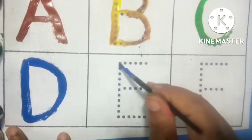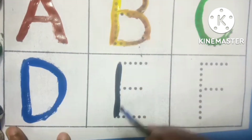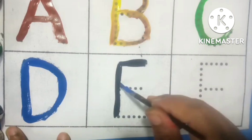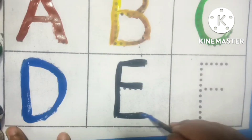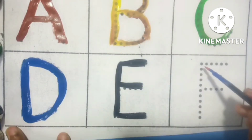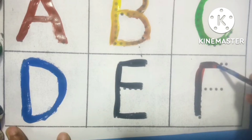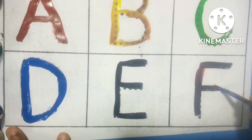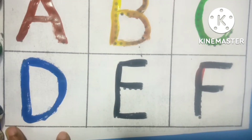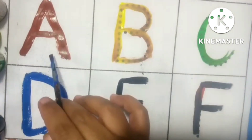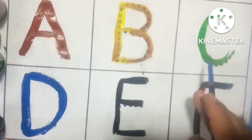Black color. E. E for elephant. Black and red color. F. F for fish. A B C D E F.